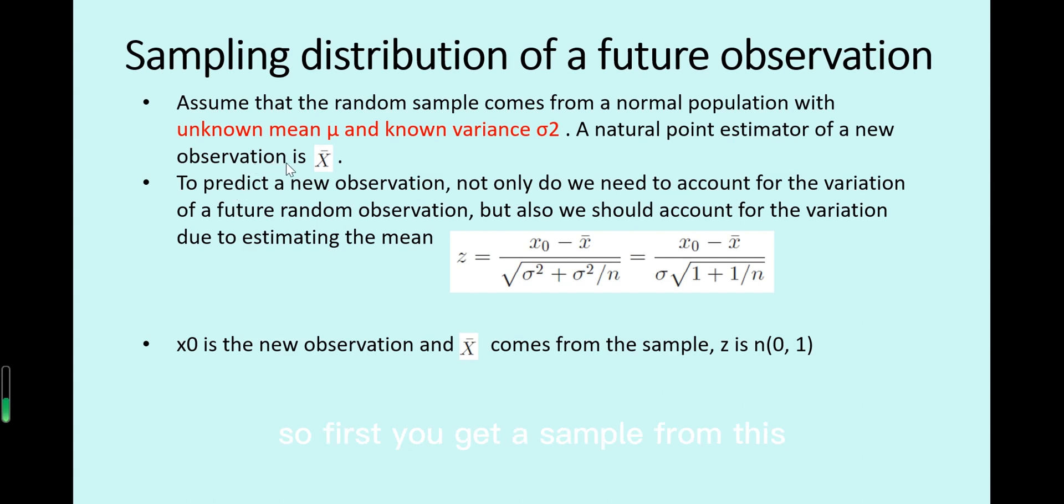So first you get a sample from this population then take the sample average mean, right? So this average mean is a point estimate of a future observation. But of course future observation has variability.